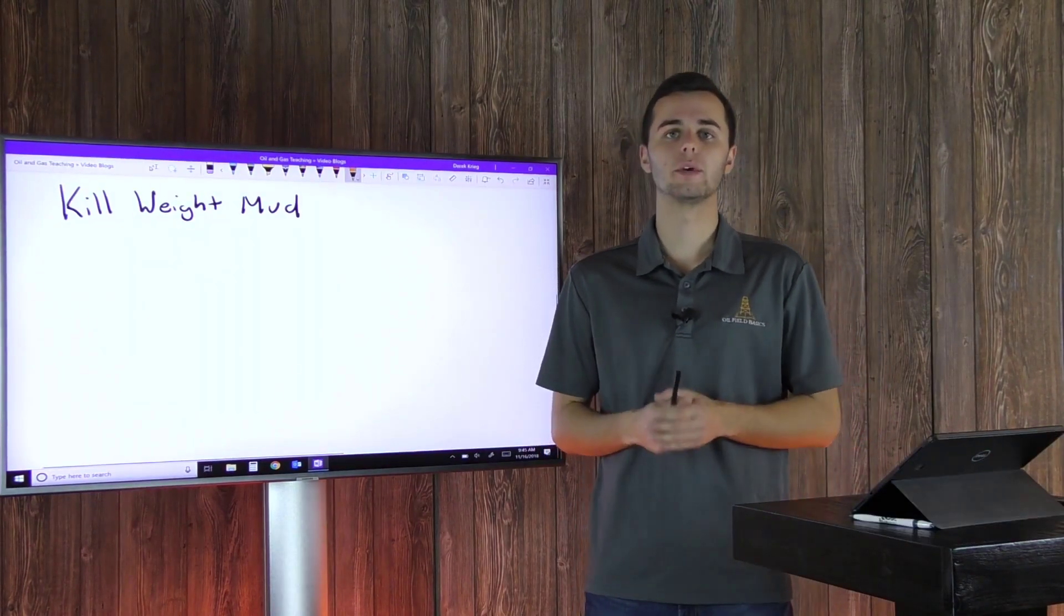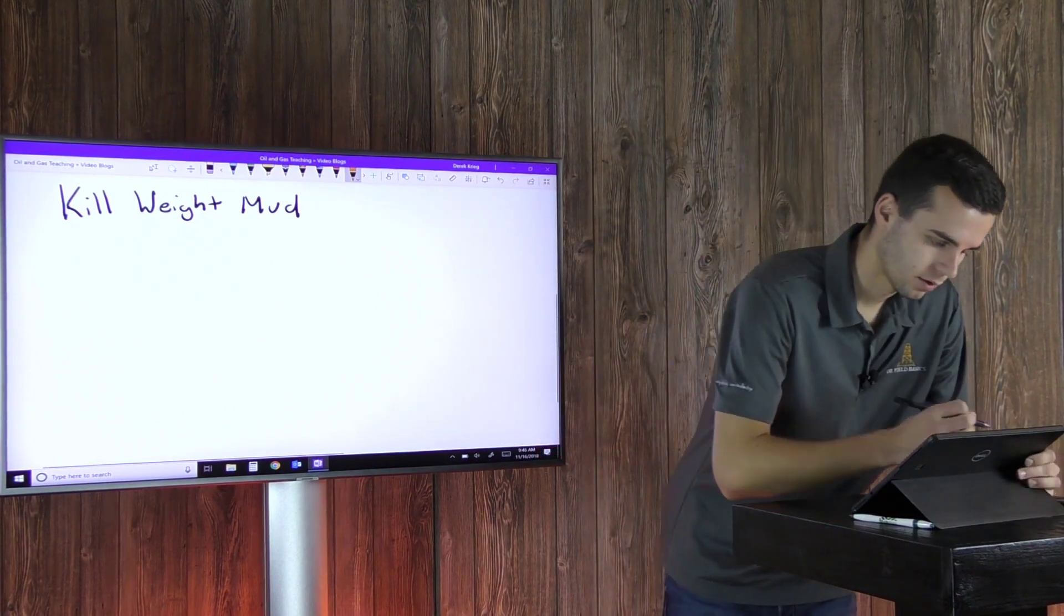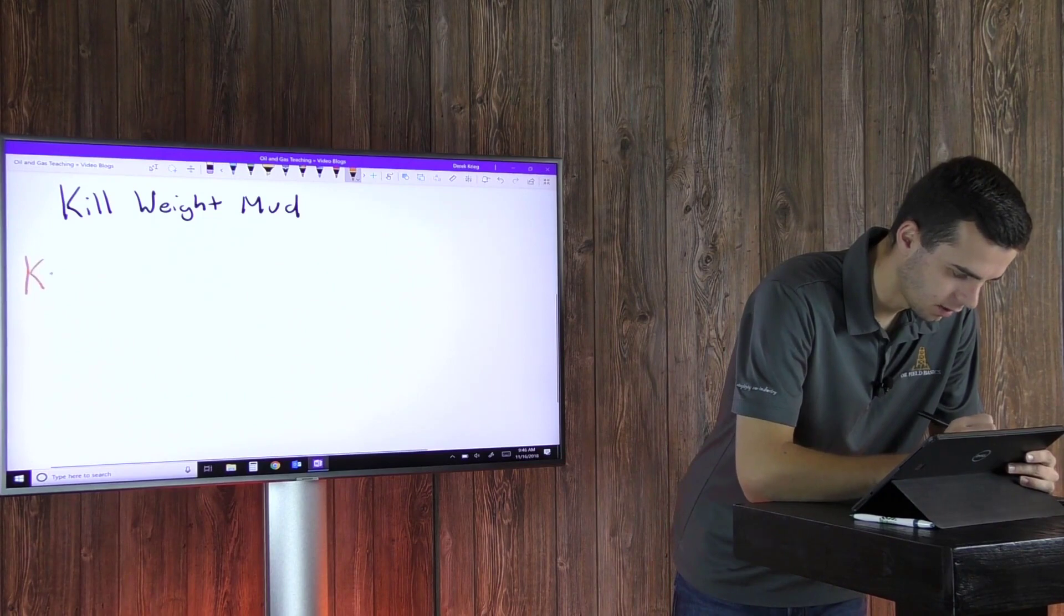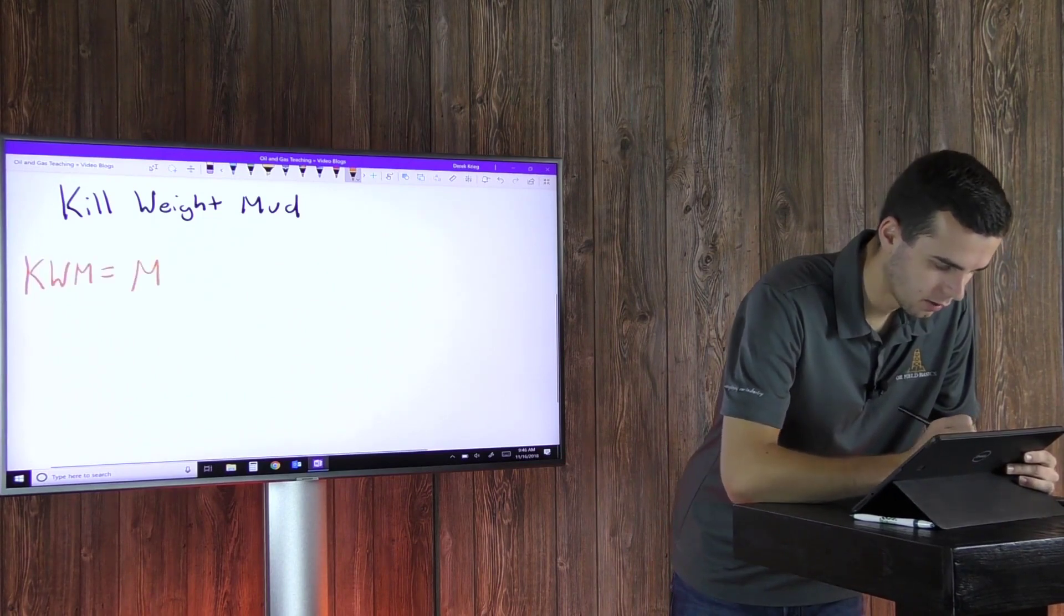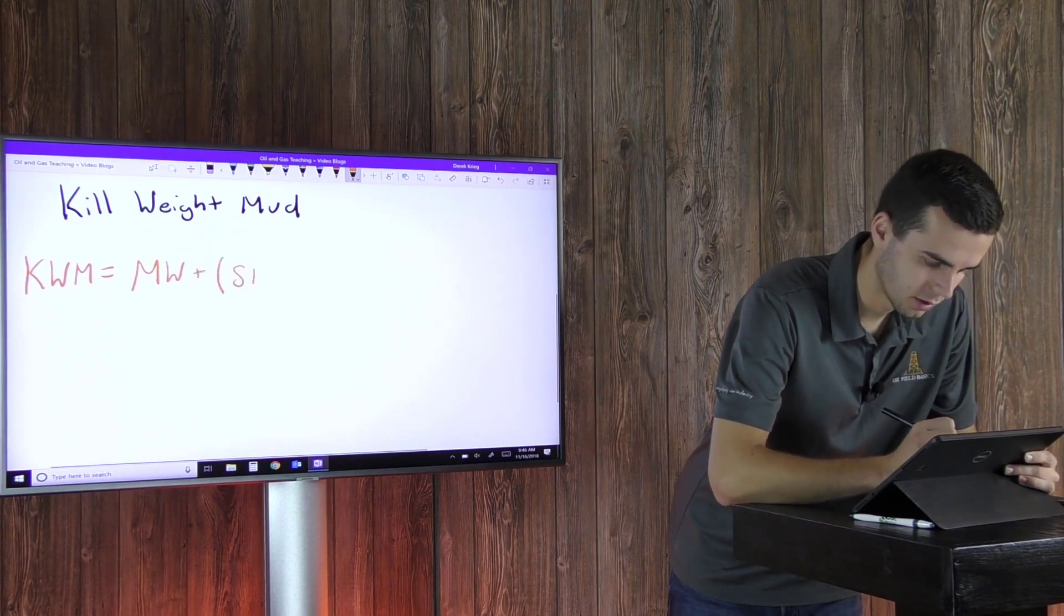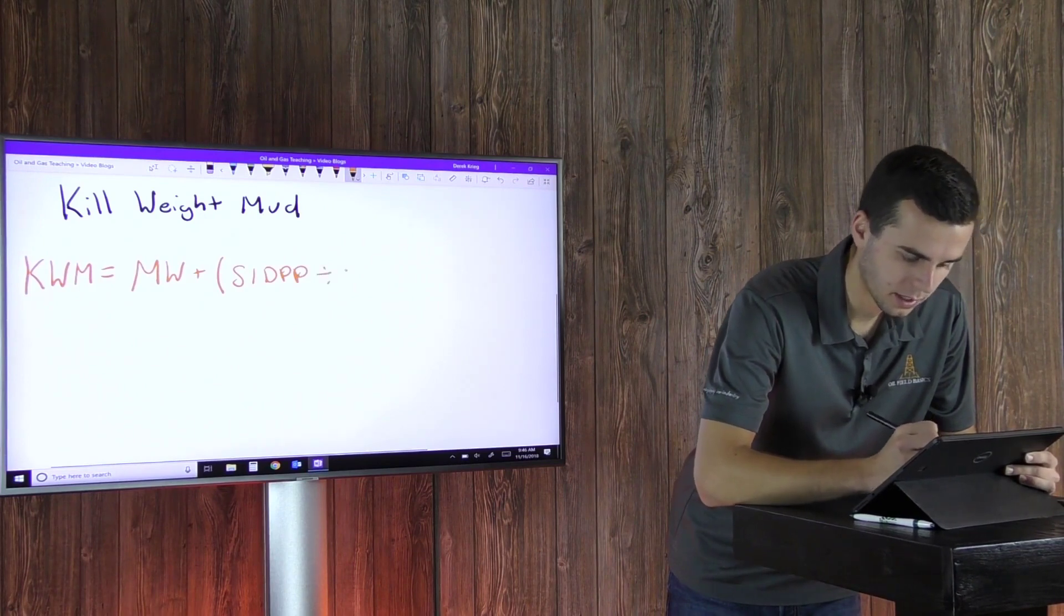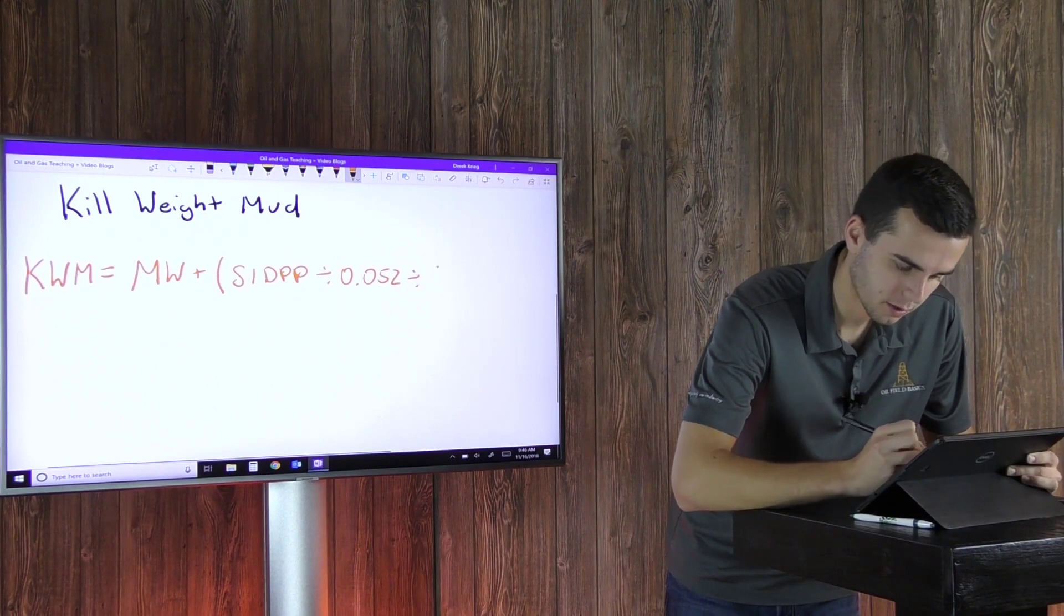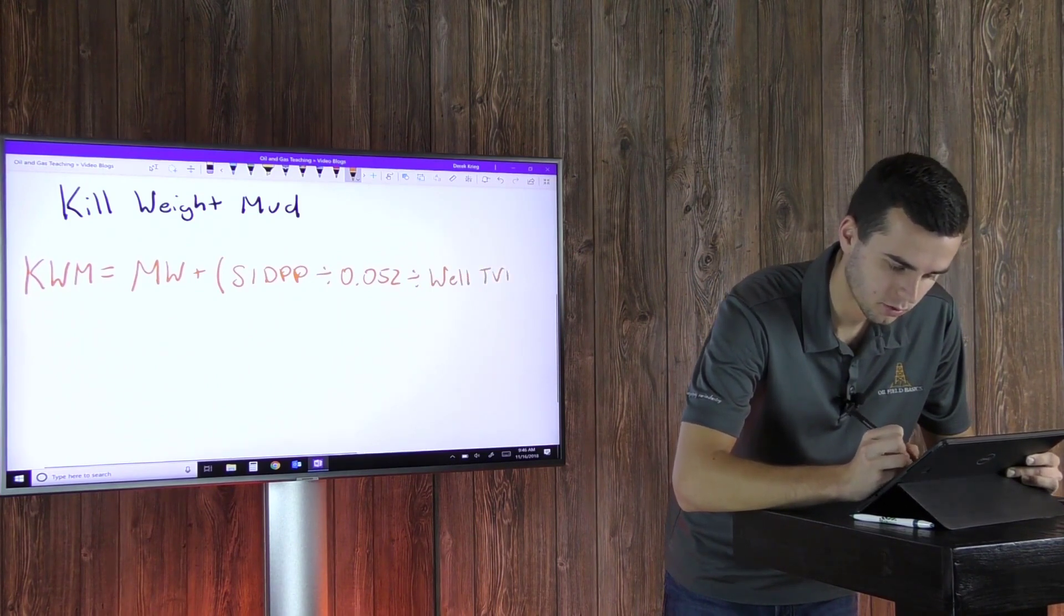Okay, so now let's go through how we can calculate our Kill Weight Mud. It's actually pretty simple. So your Kill Weight Mud, or your KWM, will equal your mud weight plus your shut-in drill pipe pressure, divided by constant 0.052, and divided by your well TVD, or your true vertical depth.